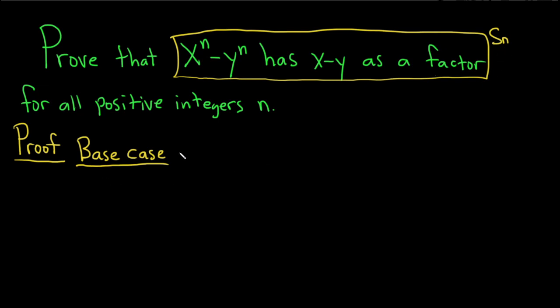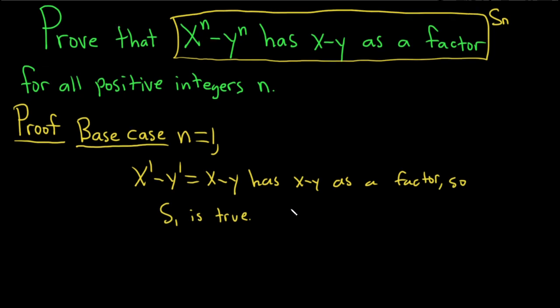So if n is 1, then we have x to the 1 minus y to the 1. That's equal to x minus y. And so the statement is true because x minus y has x minus y as a factor. So S sub 1 is true when n is equal to 1.